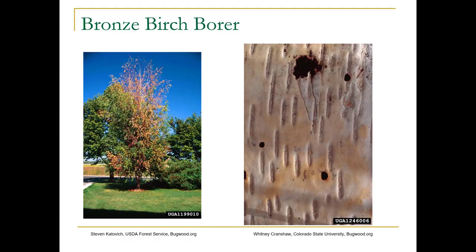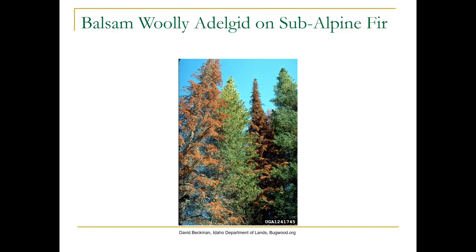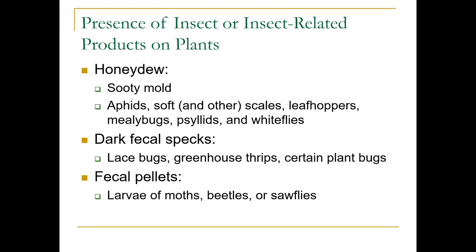Here's woolly adelgid on subalpine fir. It already has problems being grown down here — it really should not be grown in the Seattle area, it should be at elevation. So this is just one more problem it's going to encounter down here. You may not see the insects, but you might see some of their products.